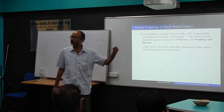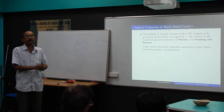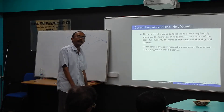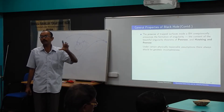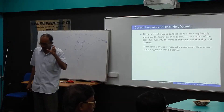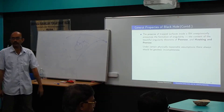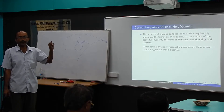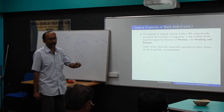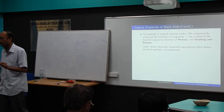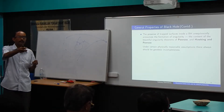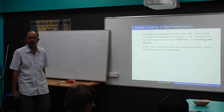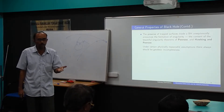Geodesic incompleteness means: if I have a singularity in the spacetime and I consider the family of geodesics from any point, I can see mathematically that there are some geodesics that cannot go for all values of the affine parameter. The affine parameter can in principle take any real value, but at a singularity the geodesic cannot be defined for some particular value of the affine parameter. That is termed geodesic incompleteness.